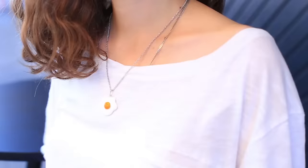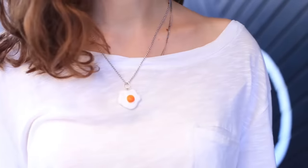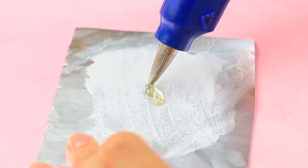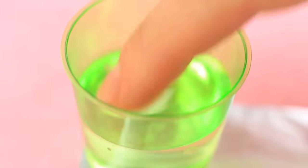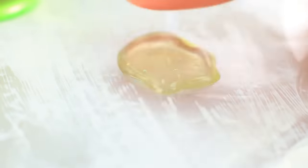It won't take you long to make this cute little charm. Squeeze a little hot glue onto the foil smudged with fatty cream. Smooth it with a wet finger. You can press it a little. It'll be the egg white.